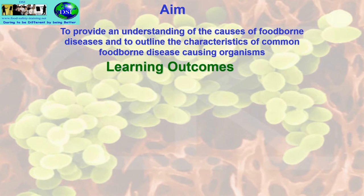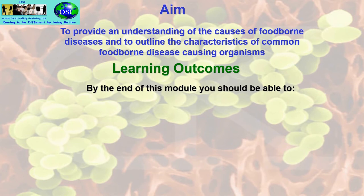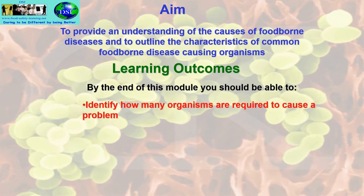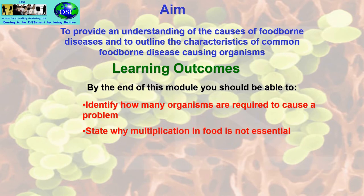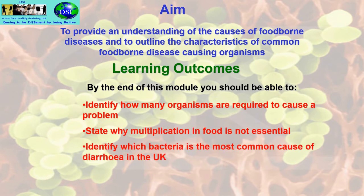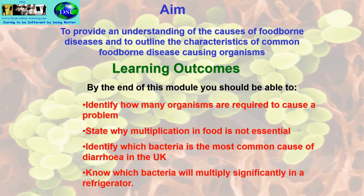The learning outcomes: by the end of this unit you will be able to identify how many organisms are required to cause a problem, state why multiplication of food is not essential, identify which bacteria is the most common cause of diarrhoea in the UK, and know which bacteria will multiply significantly in a refrigerator.